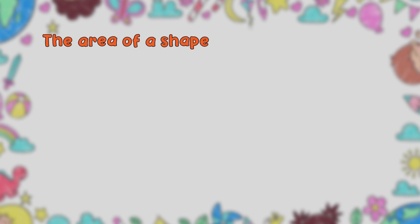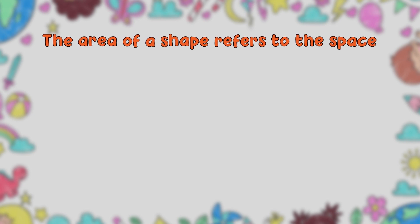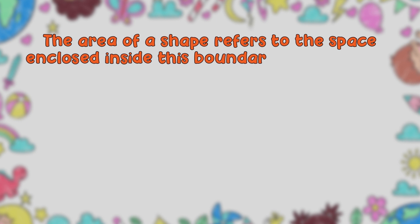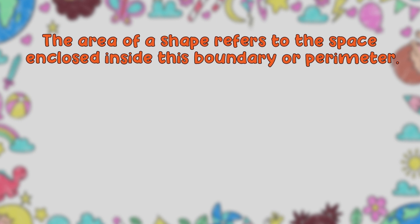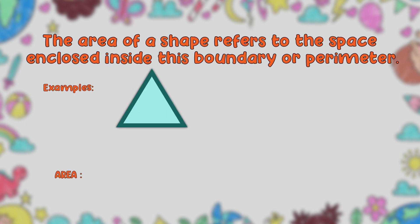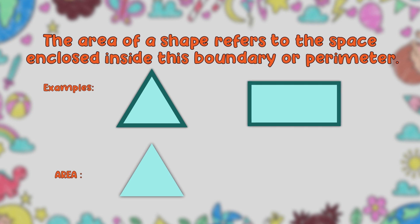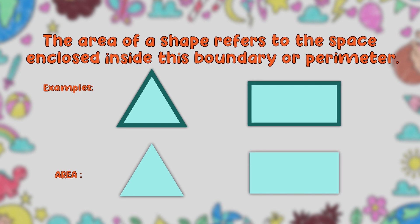The area of a shape refers to the space enclosed inside this boundary or perimeter. The examples below depict the area of the same shapes.